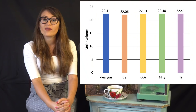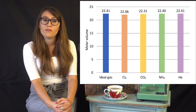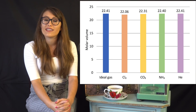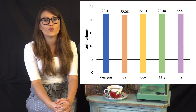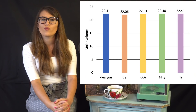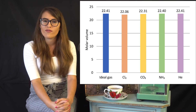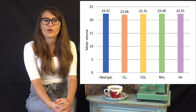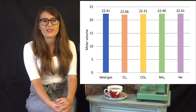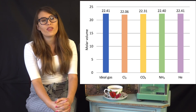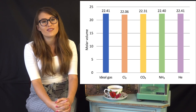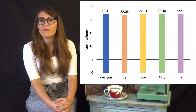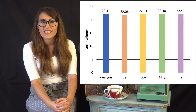The following graph compares the molar volume of an ideal gas to real gases. In comparison, real gases do have volumes close to 22.41 liters, but they also show signs of deviations from ideality.